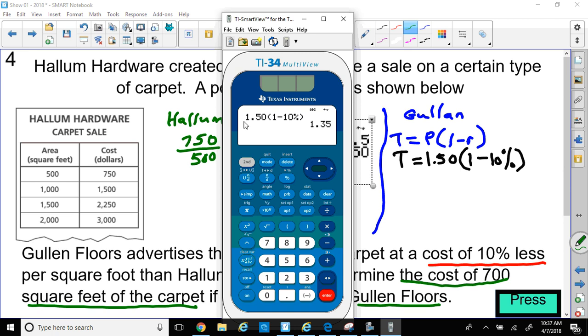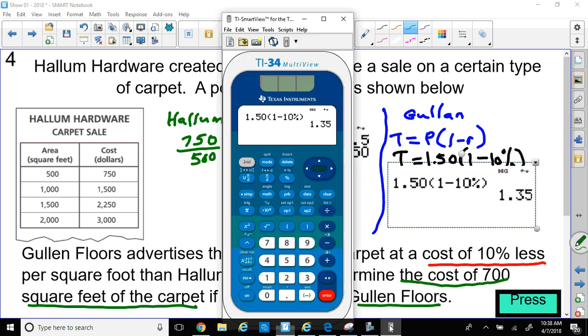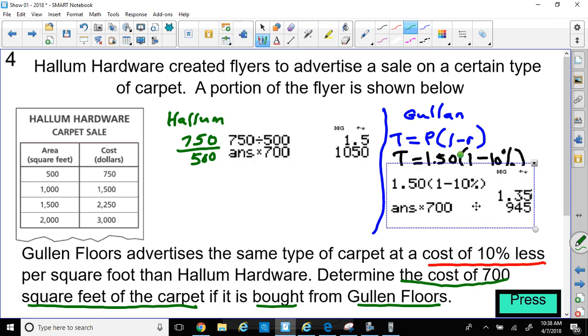And the total cost would be $1.35 for one square foot. So since it's $1.35 for one square foot, they're cheaper than Hallum, because Hallum has $1.50 as compared to $1.35. So Hallum is a little higher by $0.15 than Gullen, and they said Gullen was cheaper. But they want to know what is the cost of 700 square feet of carpet from Gullen. So let me get my calculator back one more time and multiply that answer I got by 700. And that will give me the cost of 700 square feet. So it's going to cost me $945 for 700 square feet of carpet. And I save money if I go to Gullen. So the answer is $945.